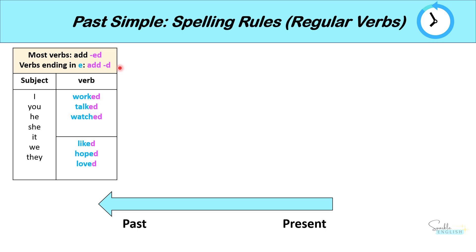The next rule is that verbs ending in E, we just add D. So like becomes liked, hope becomes hoped, love becomes loved — because all of these verbs end in E.